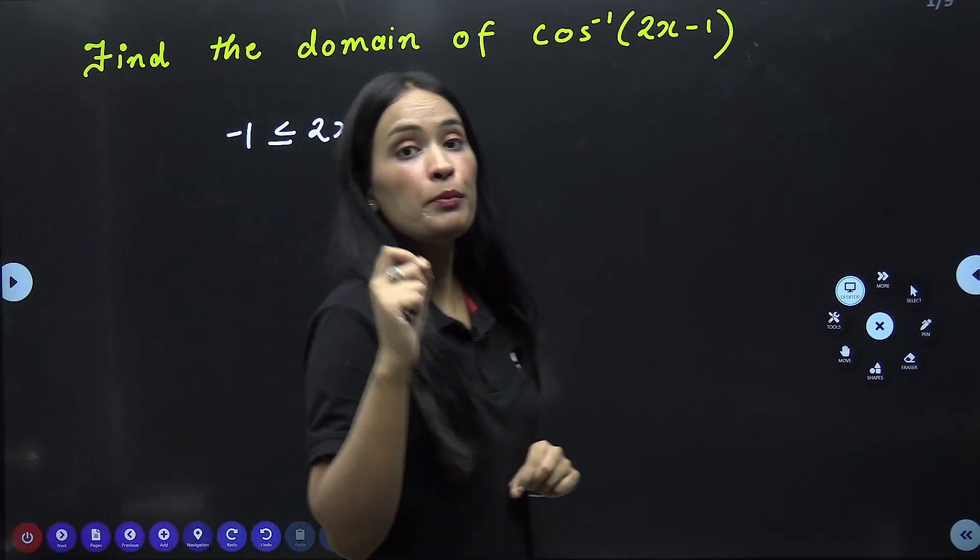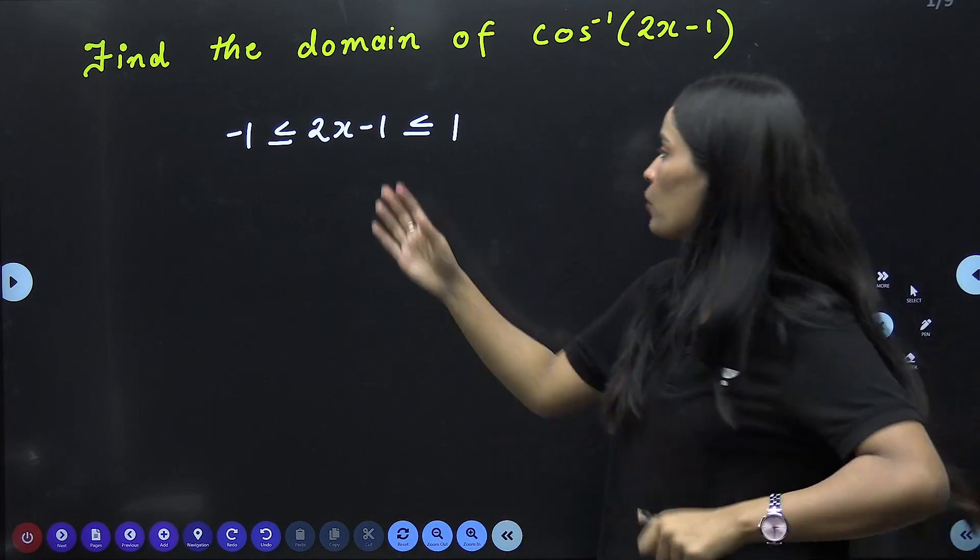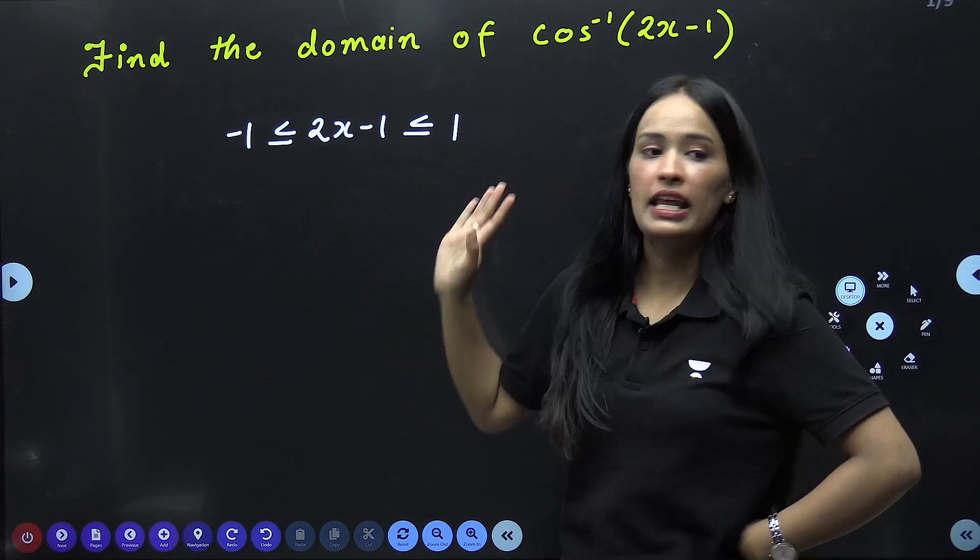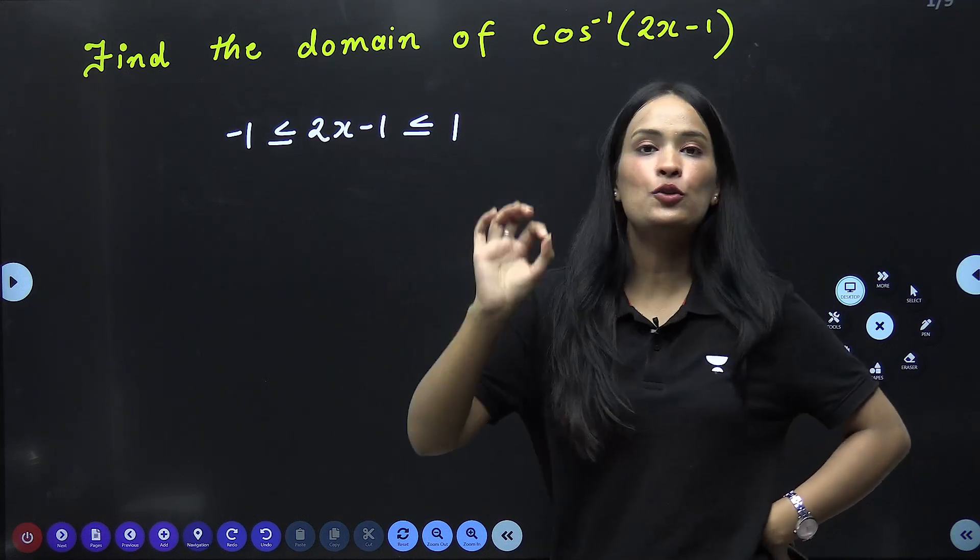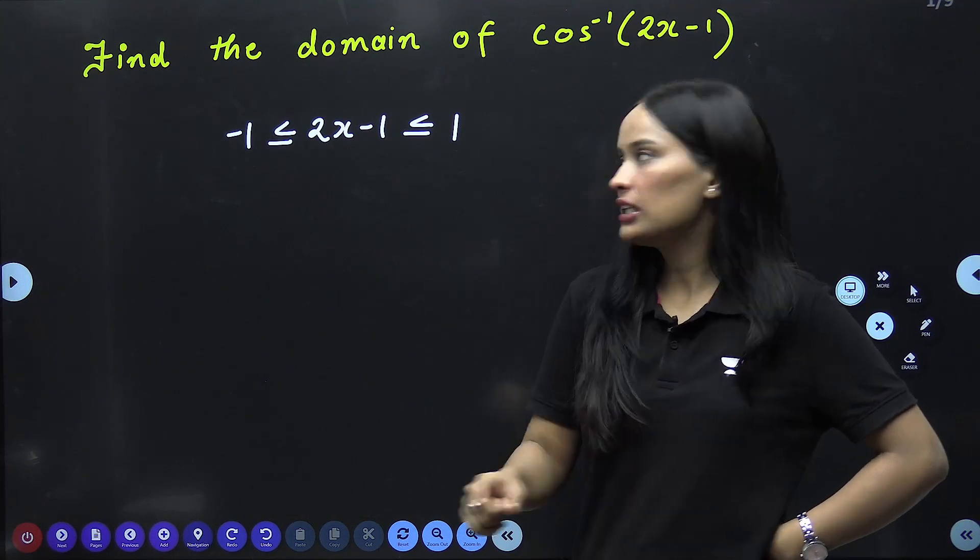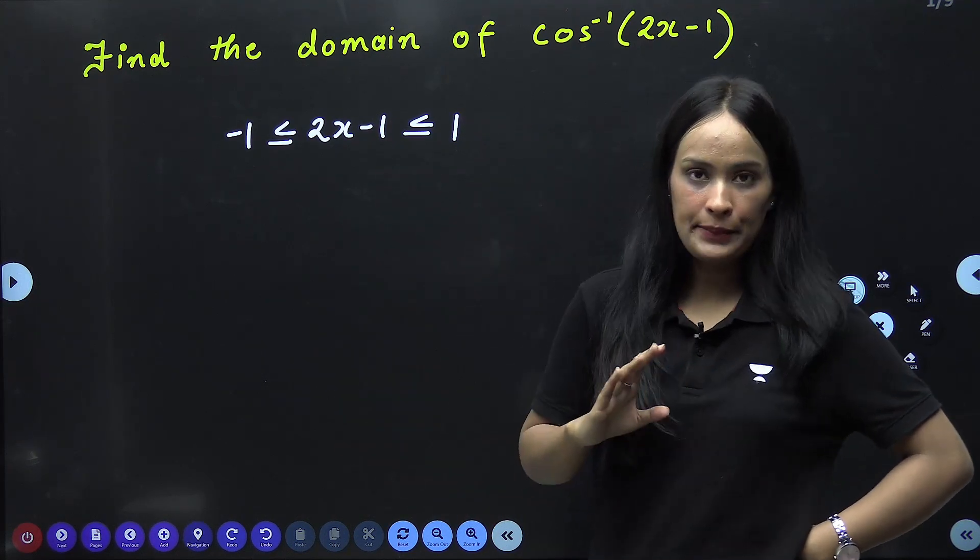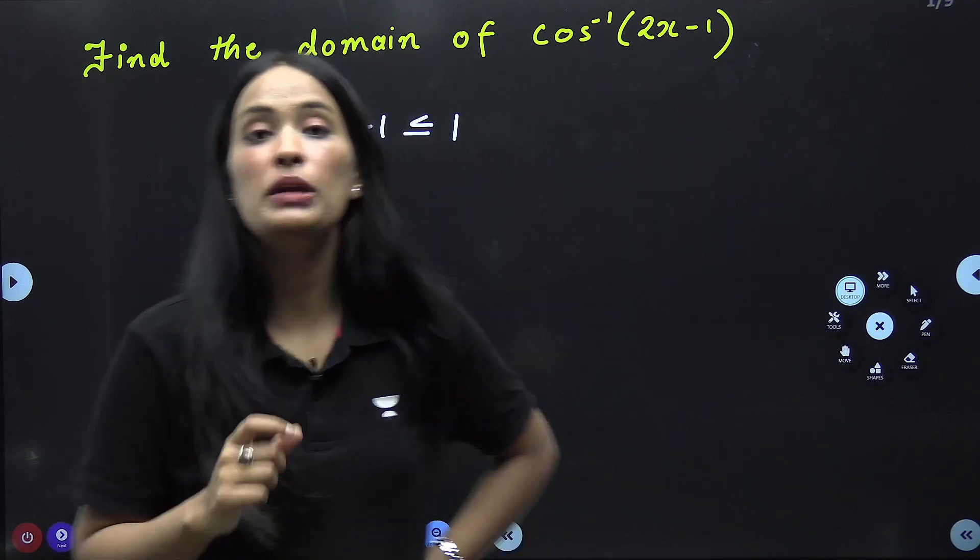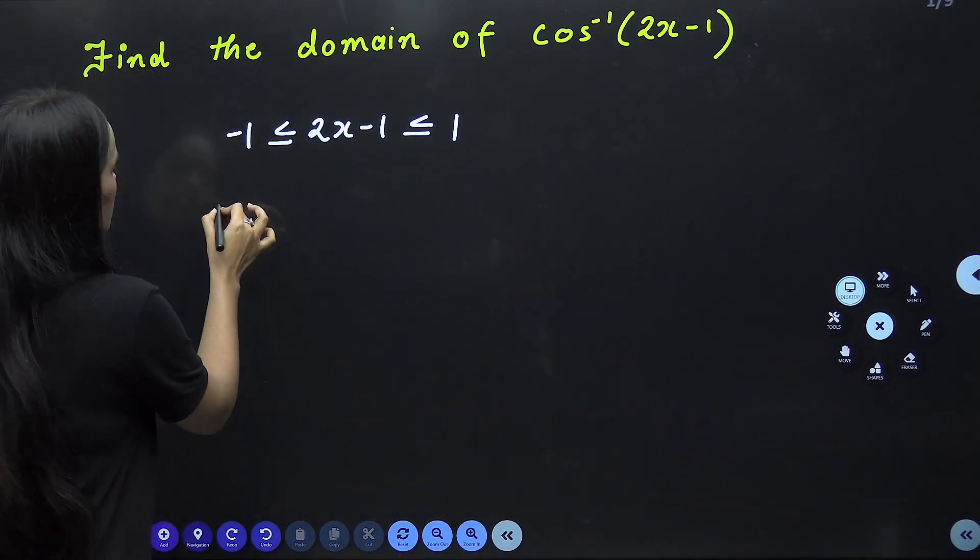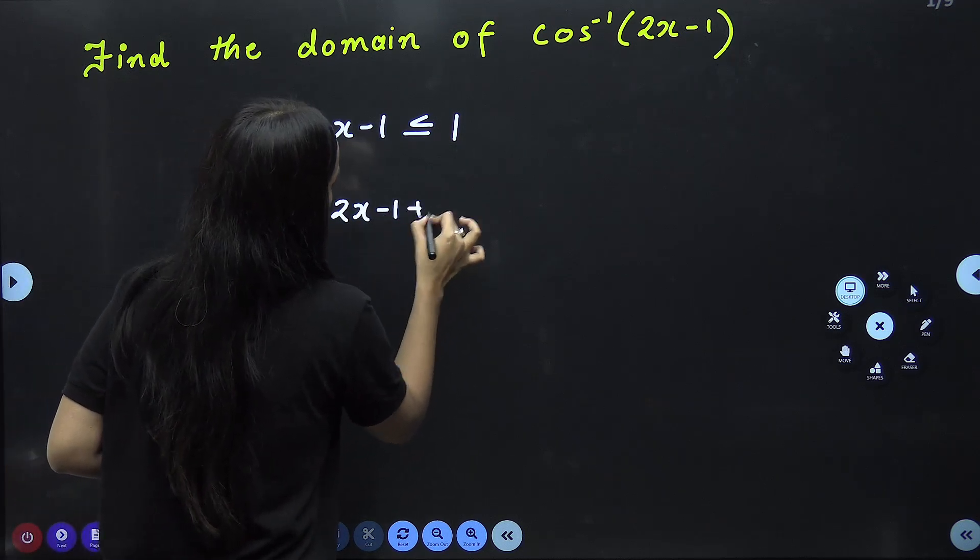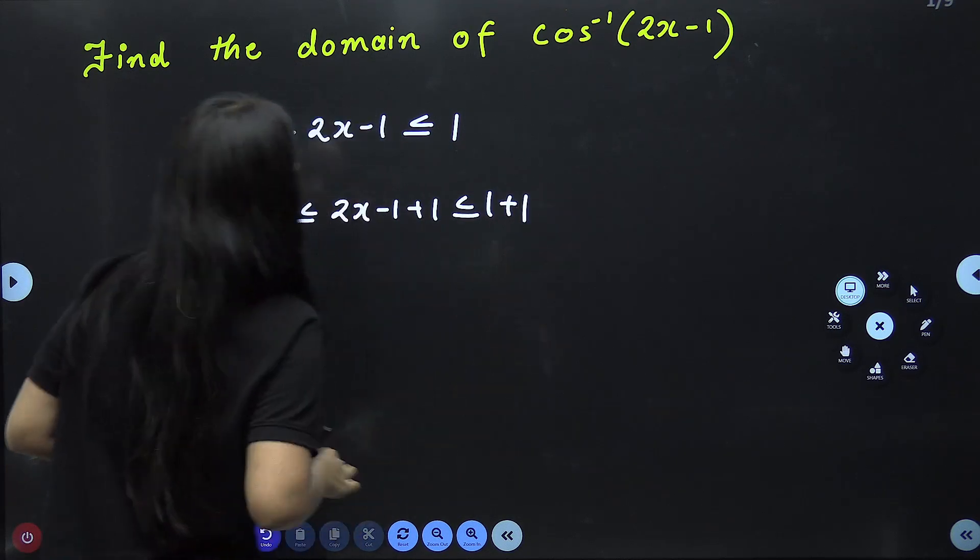Now, step number 2 is to make your x single. You have to isolate x. So, there is minus 1, so you will add here. And here, x is in the 2 multiplication. So, first of all, take this minus 1 to the other side. How will this minus 1 be removed? When you add 1 to the entire inequality. Okay? So, this will become minus 1 plus 1, 2x minus 1 plus 1, 1 plus 1. So what did you get?